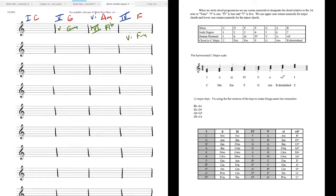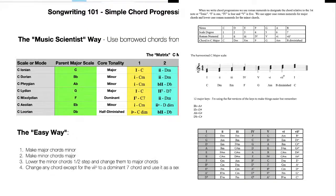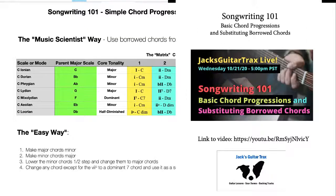The easy way: you can take any chord progression and just start messing with stuff like that and it's going to get you new sounds. The music scientist way, we're going to come back to in a second, but I want to go back to the idea of the Beatles, because it's a great way to see how someone can take a chord progression and do something interesting.